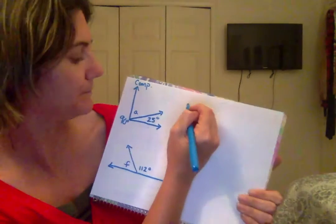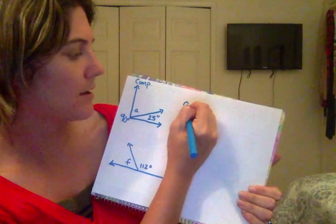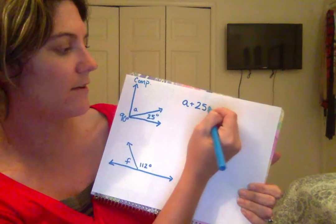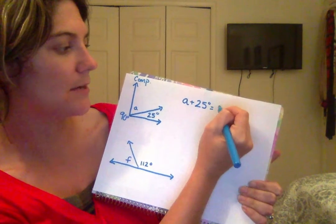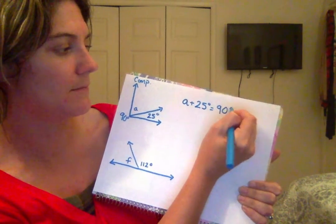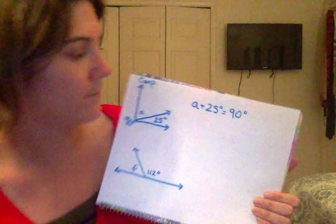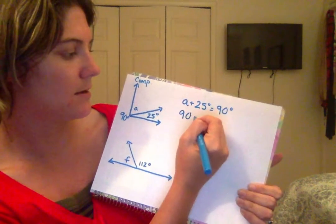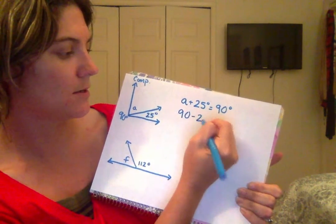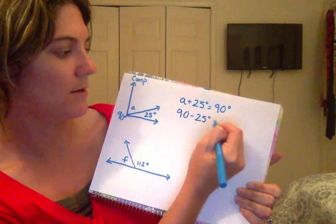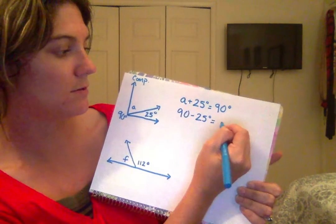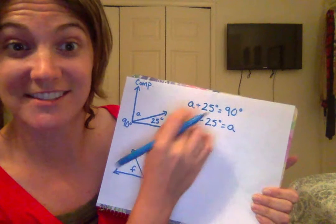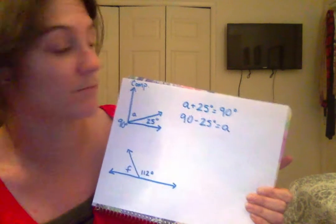So, I'm going to write what I know here. I would either write A plus 25 equals 90, or you can write 90 minus 25 equals A. Those are inverse operations there.